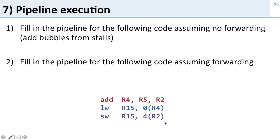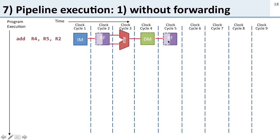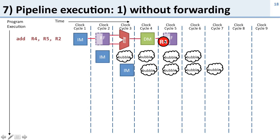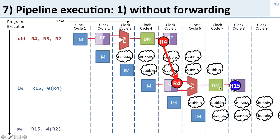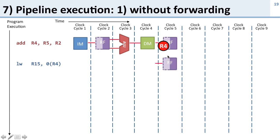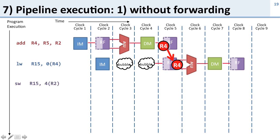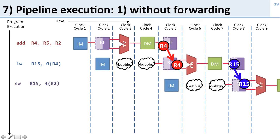Now let's look at pipeline execution. We have an add, a load, and a store, with a dependency on R4. Without forwarding, after the first instruction we have to wait until the data is in the register file before the second instruction can read it — requiring two cycles of delay. After the load word, since there's no forwarding from memory, we again wait two more cycles. This means inserting many bubbles or no-ops to spread instructions out.